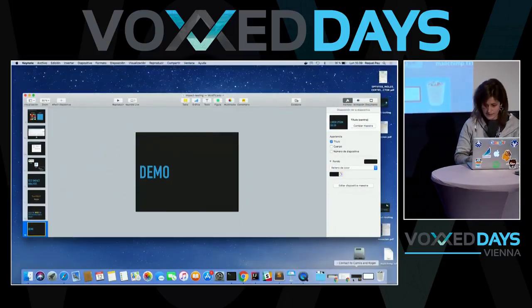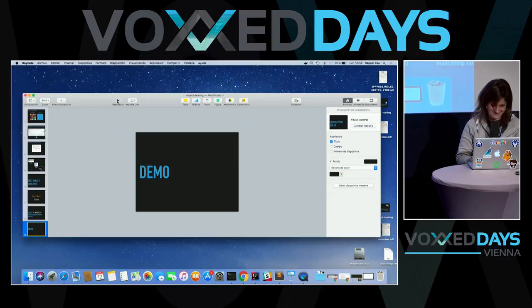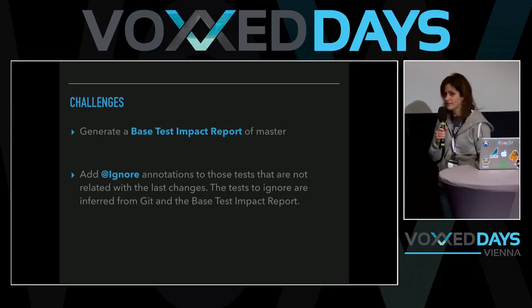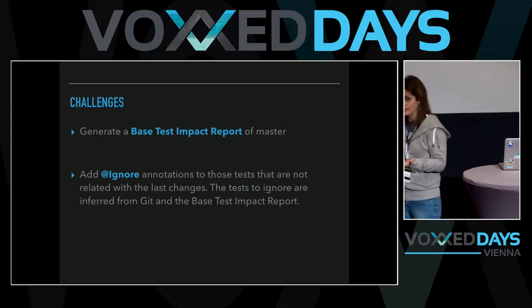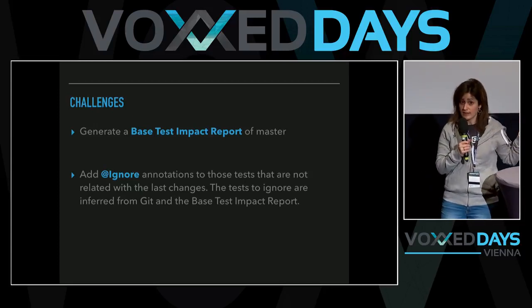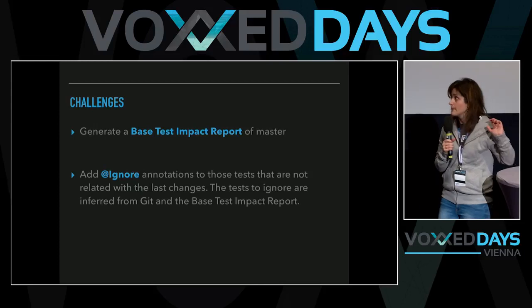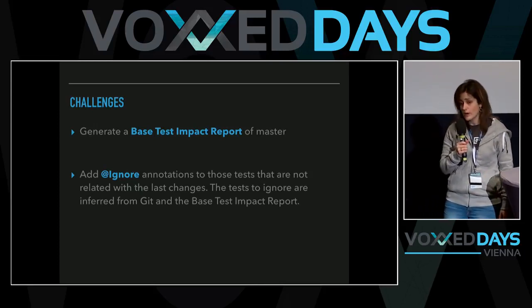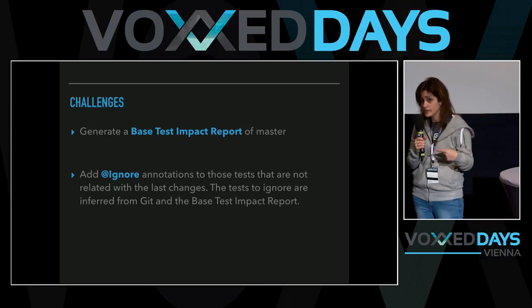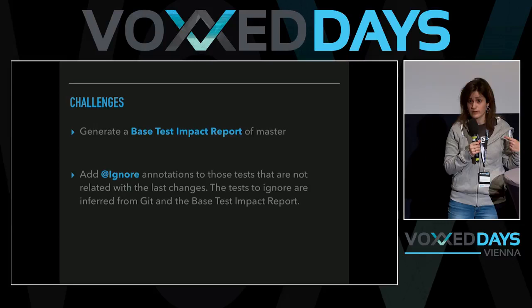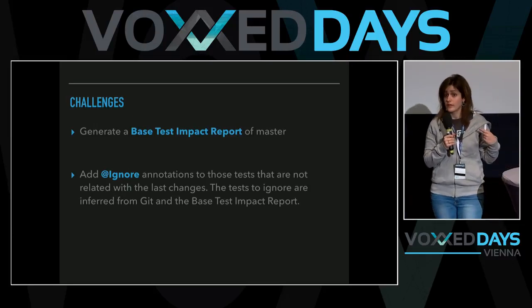The idea works. We have split the problem in two steps: first, generate those explicit mappings automatically by analyzing the repository; and second, generate ignore annotations dynamically in order to skip tests that are not related to our changes.